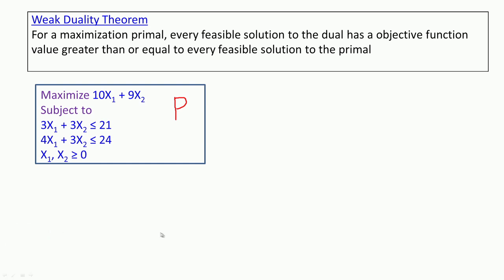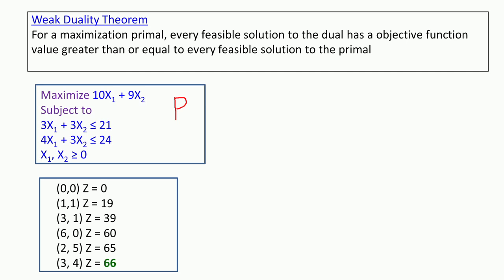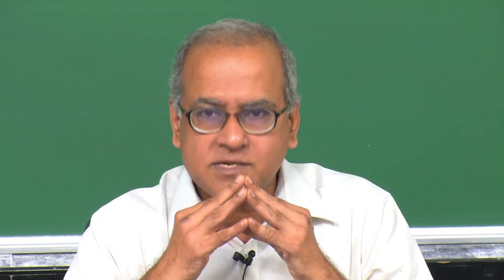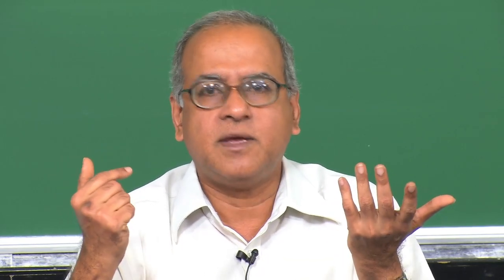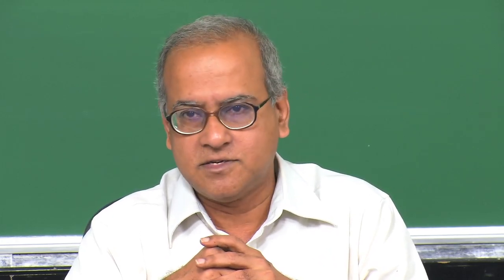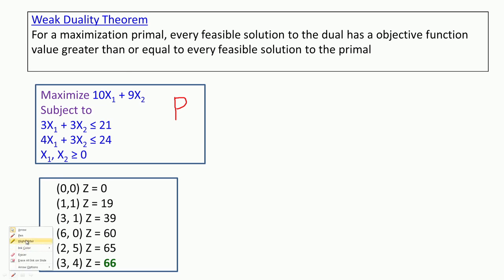The theorem says that every feasible solution to the dual will have an objective function value greater than or equal to every feasible solution to the primal. Let us first find out some feasible solutions to the primal. Any X1, X2 that satisfies 3X1 + 3X2 ≤ 21, 4X1 + 3X2 ≤ 24, and X1, X2 ≥ 0 is called a feasible solution. The easiest one is (0, 0).